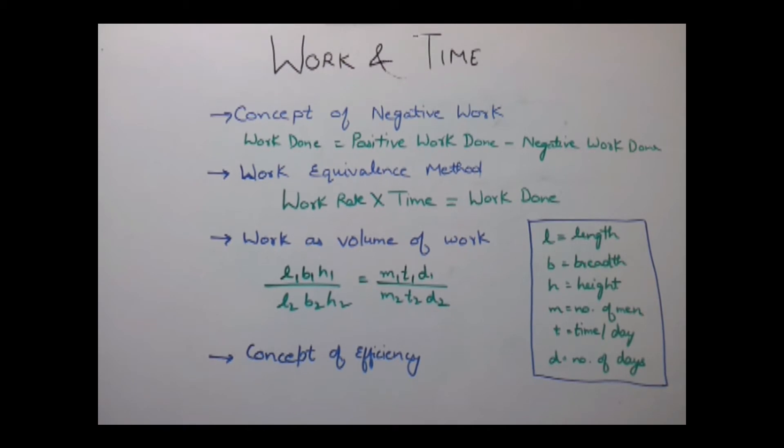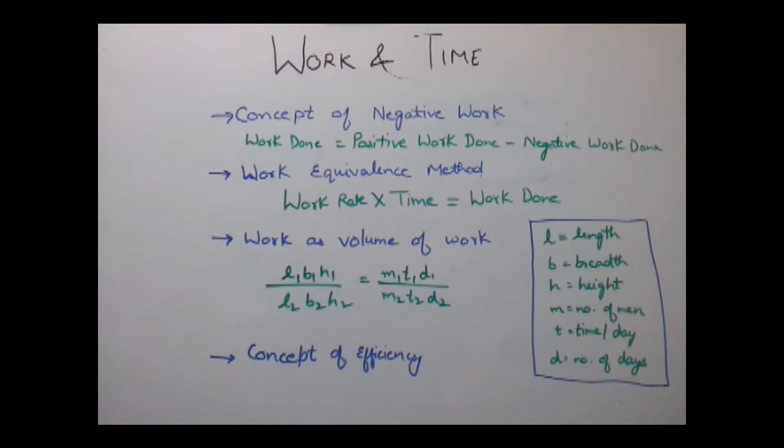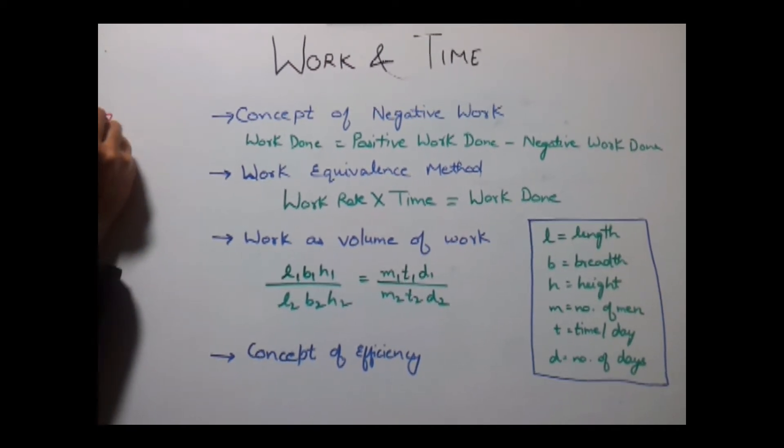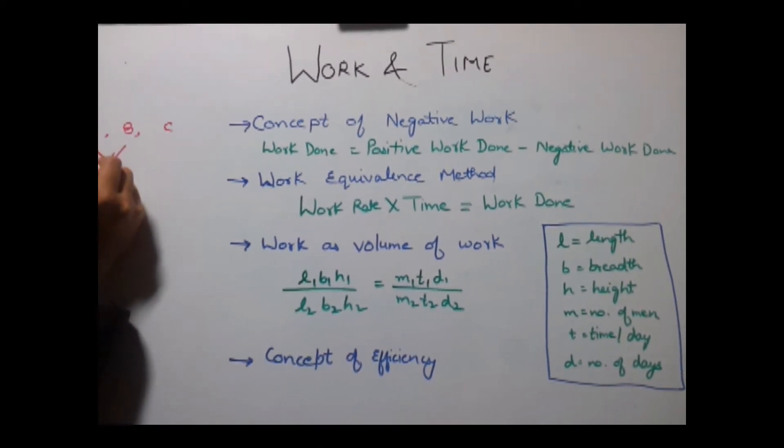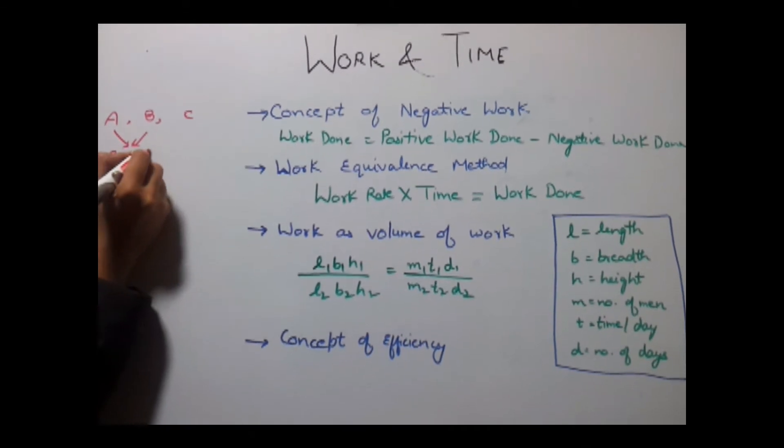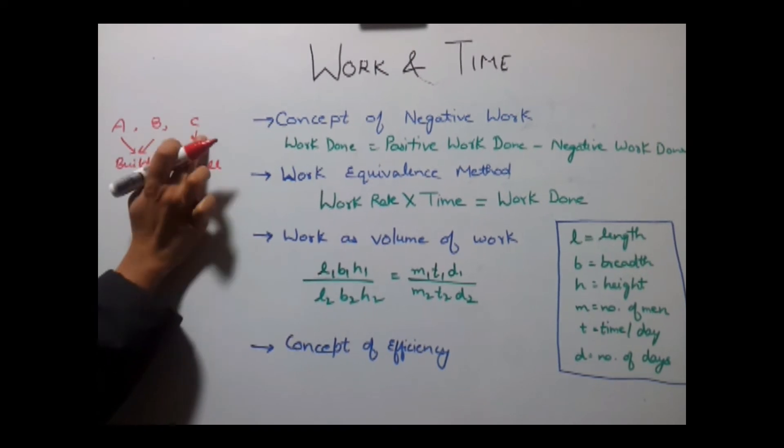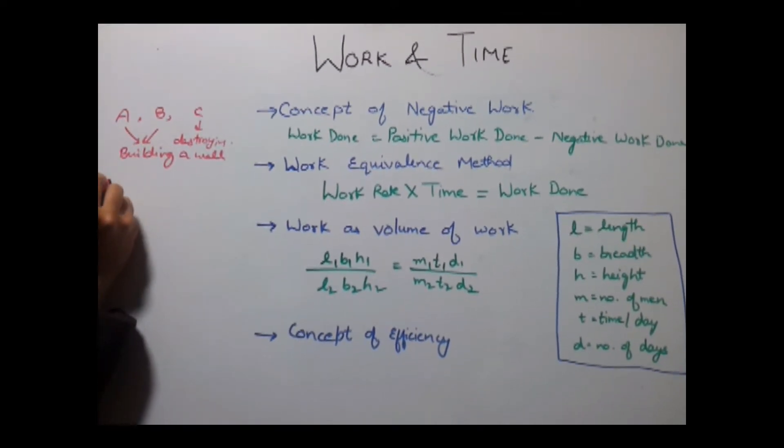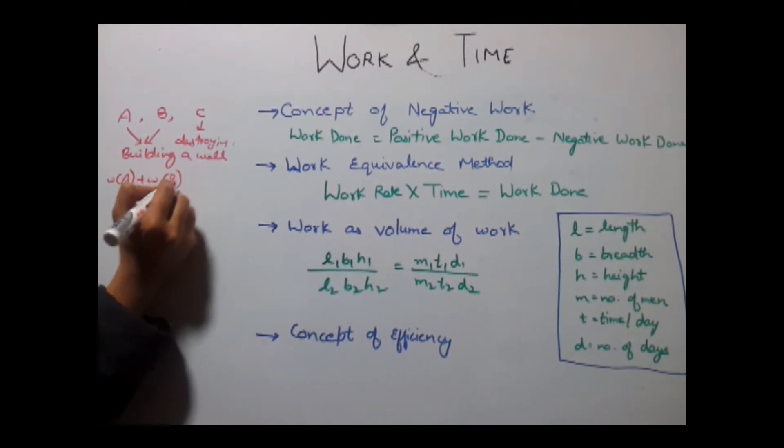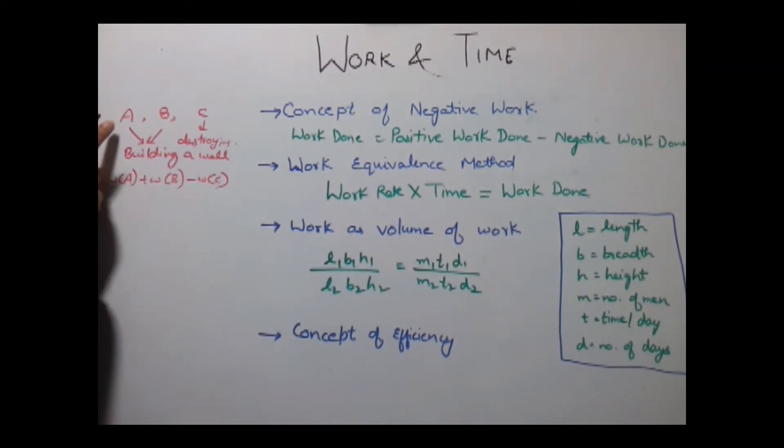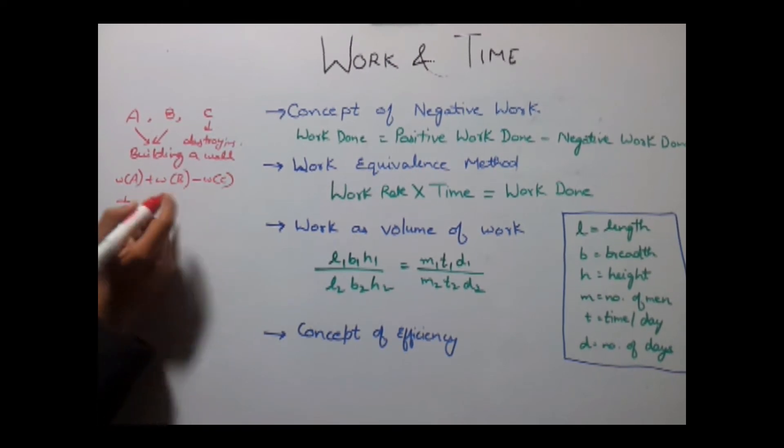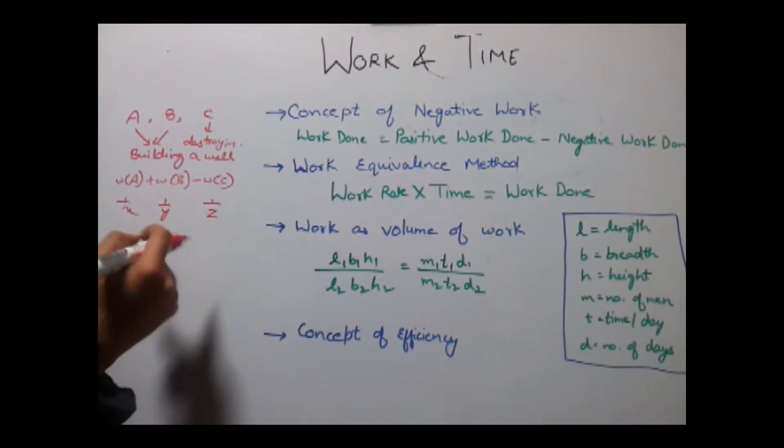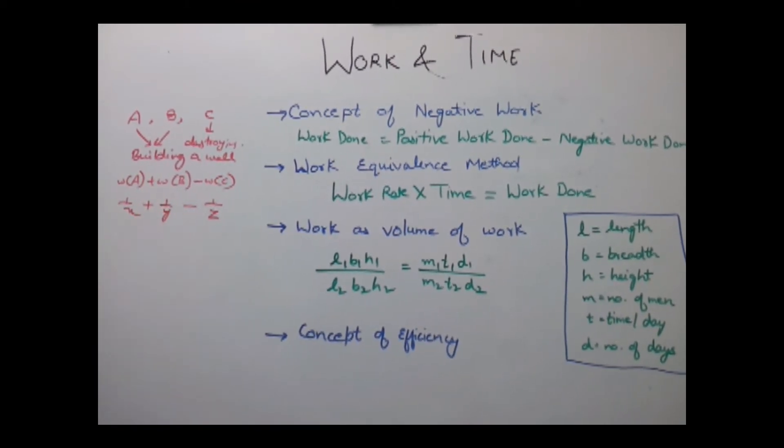First one is concept of negative work. While solving problems related to work and time we generally come across problems where negative work is also given, that is say for example if there are three persons A, B and C, A and B are doing some work say they are building a wall but this third person C is destroying it. So total work done will be equal to work done by A plus work done by B minus work done by C. Say if work done by A is 1 upon X, work done by B in one day is 1 upon Y, and work done by C that is the work of destroying the wall is 1 by Z, then the total work done or the wall will be built as 1 upon X plus 1 upon Y minus 1 upon Z.